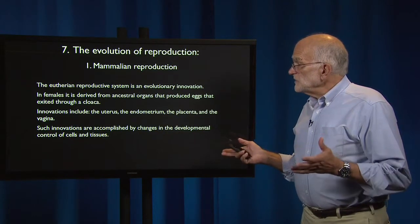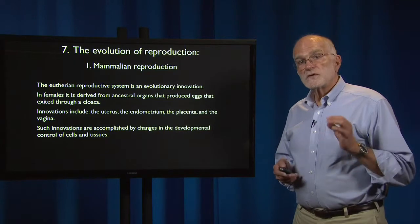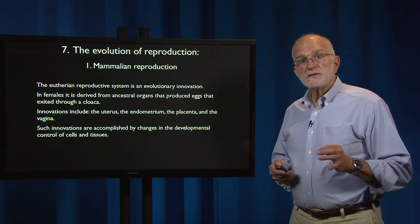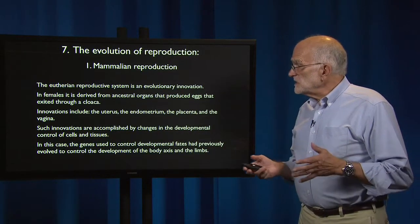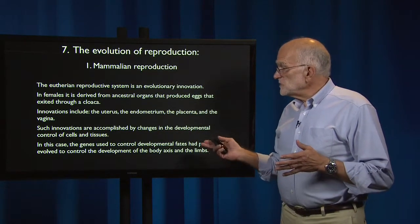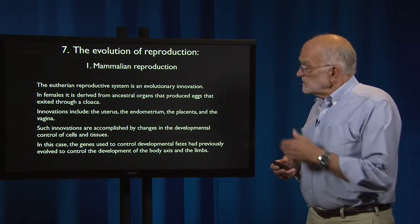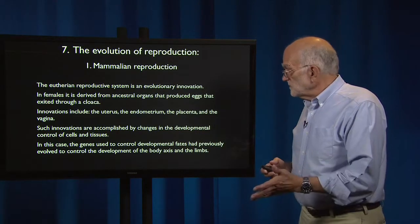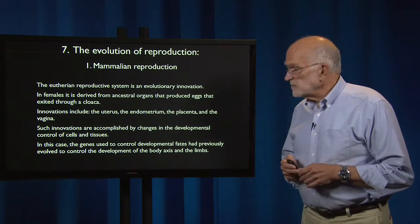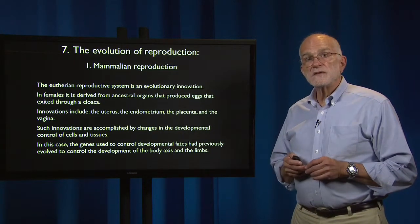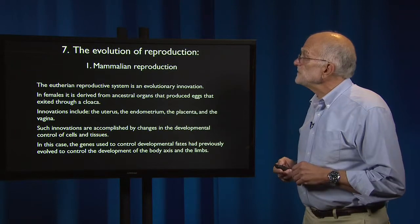These innovations are accomplished by changes in the developmental control of cells and tissues. In this case, the genes that are used to control developmental fates in the reproductive tract had previously evolved to control the development of the body axis and the limbs — and so that's where we're going to start.